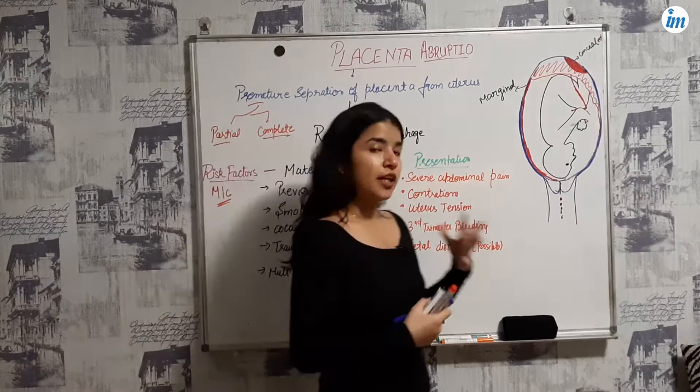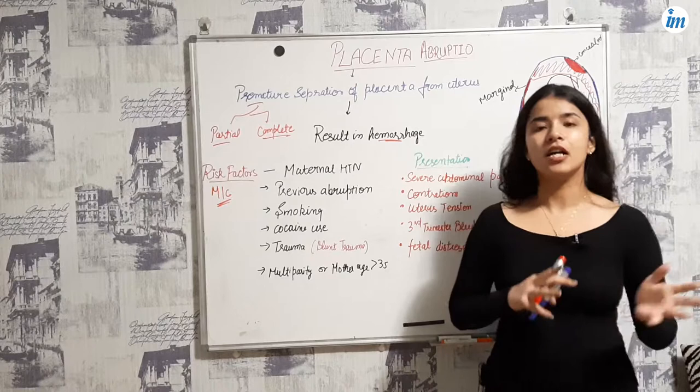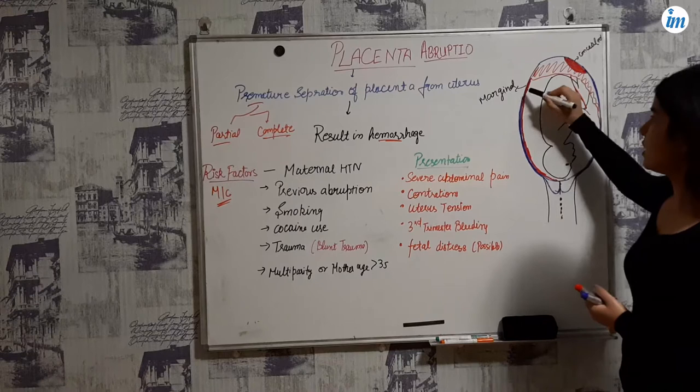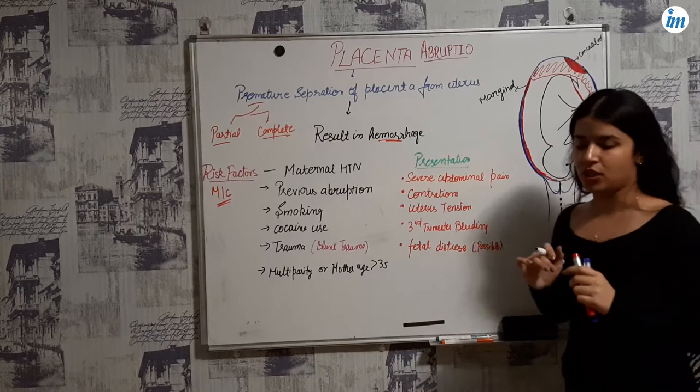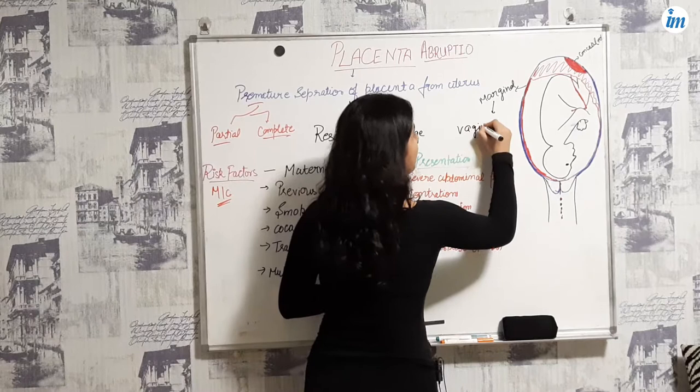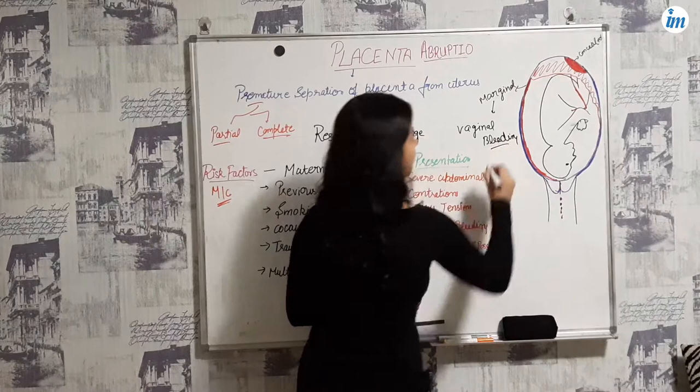Now there are two types of placenta abruptio: one is the marginal type and the other is the concealed type. In the marginal type, if you see, there is a marginal separation of the placenta. In the marginal type, you will see vaginal bleeding.